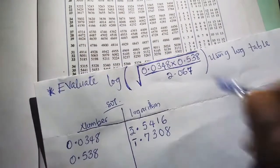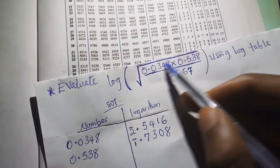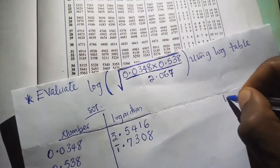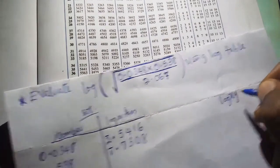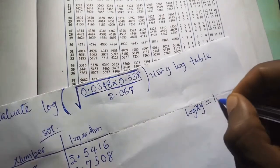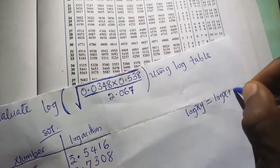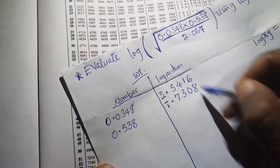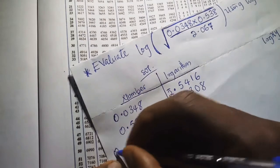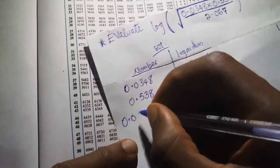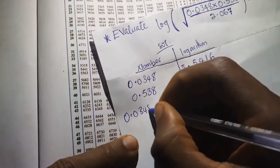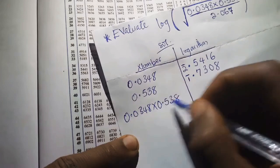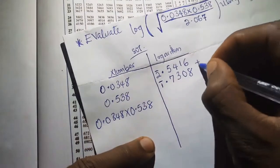Looking at the expression, we see multiplication. From the law of logarithms, log(x × y) equals log x plus log y. So instead of multiplying the numbers, we add their logarithms. For 0.0348 multiplied by 0.538, we add their logs together. The log table gives us 7308 as the mantissa for 0.538 with characteristic bar 1.